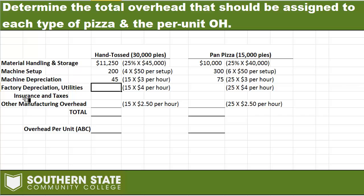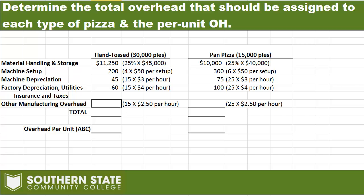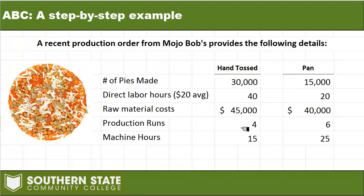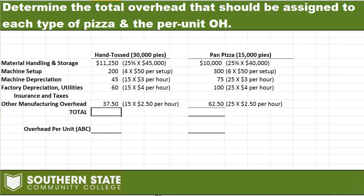For factory utilities, insurance, taxes, and depreciation, we had 15 machine hours as our allocation base at $4 per hour. For other manufacturing overhead at $2.50 per hour, with 15 machine hours for hand-tossed and 25 for pan pizza, that gives us $37.50 and $62.50 respectively. The way I got those numbers was to take the pool rate and multiply it by the actual activities that happened. Let's add those up to get the total overhead to apply for each product.